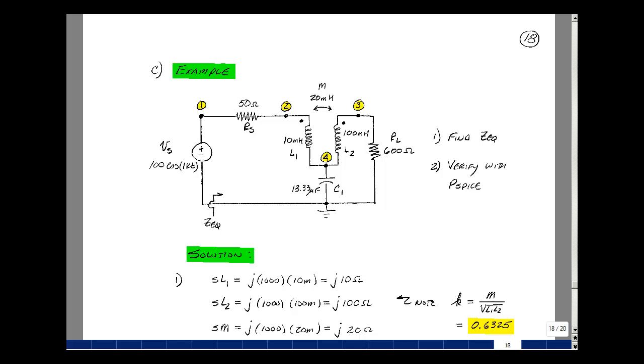This lesson deals with a SPICE transformer example. You can find these notes in the ECE202 ebook in Chapter 15, starting on page 18. Given this transformer example, could you find Z equivalent by hand calculation and then verify the results with PSPICE?